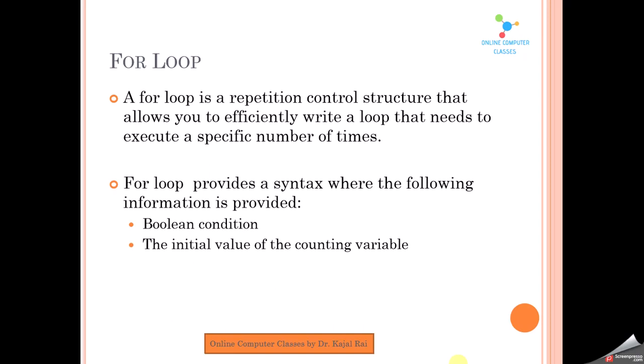The next important thing is the initial value of the counting variable. For example, if you initialize a variable — suppose i equals 0 or i equals 1 — and then repeat certain instructions up till i is less than 5 or less than 10, whatever condition you choose. Then the incrementation of that counting variable is also very important. If you do not increment i, the loop will repeat an infinite number of times and the program collapses. That is why it is very important to increment the counting variable.